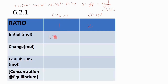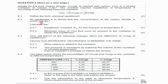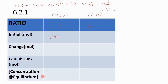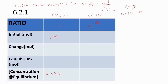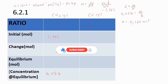We substitute 1.382 as the initial moles. We are also given that at equilibrium the concentration of CO₂ is 0.054 mol·dm⁻³. Using c = n/V, with concentration 0.054 and volume 3 dm³, cross-multiplying gives the equilibrium moles of CO₂ as 0.162.